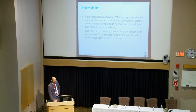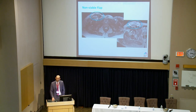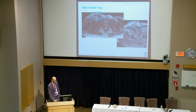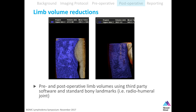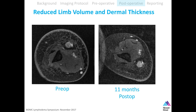For flap viability, postoperative swelling is common, but we want to look at the flap contents. On fluid-dark, fat-bright images, here is a groin flap that is not viable — it's edematous, totally dark, and unfortunately this flap was infected. Here's an example of limb volume reduction measurements using third-party software. On axial images, you can see nicely the reduction in fluid content and skin thickness — you can have a global 3D assessment or an axial assessment.